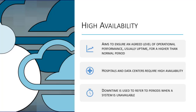High availability, or HA as it's known, is a characteristic which aims to ensure an agreed level of operational performance for a higher than normal period of time. This operational performance is typically measured as uptime.